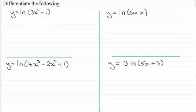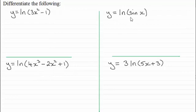Hi there. In this video I want to show you how we differentiate natural log functions which are just more than the natural log of x. You can see here in brackets we've got the natural log of 3x squared minus 1, and here 4x cubed minus 2x squared plus 1, and then a trigonometric one — the natural log of sin x — and in this example we're looking at putting a number in front: three times the natural log of 5x plus 3.